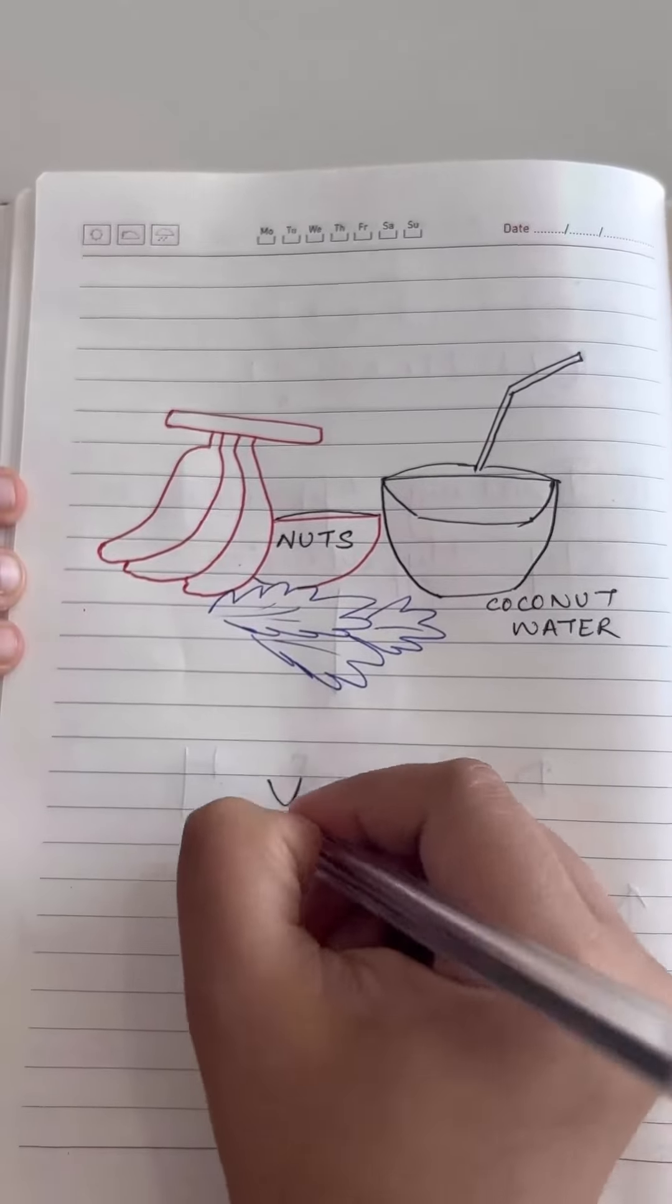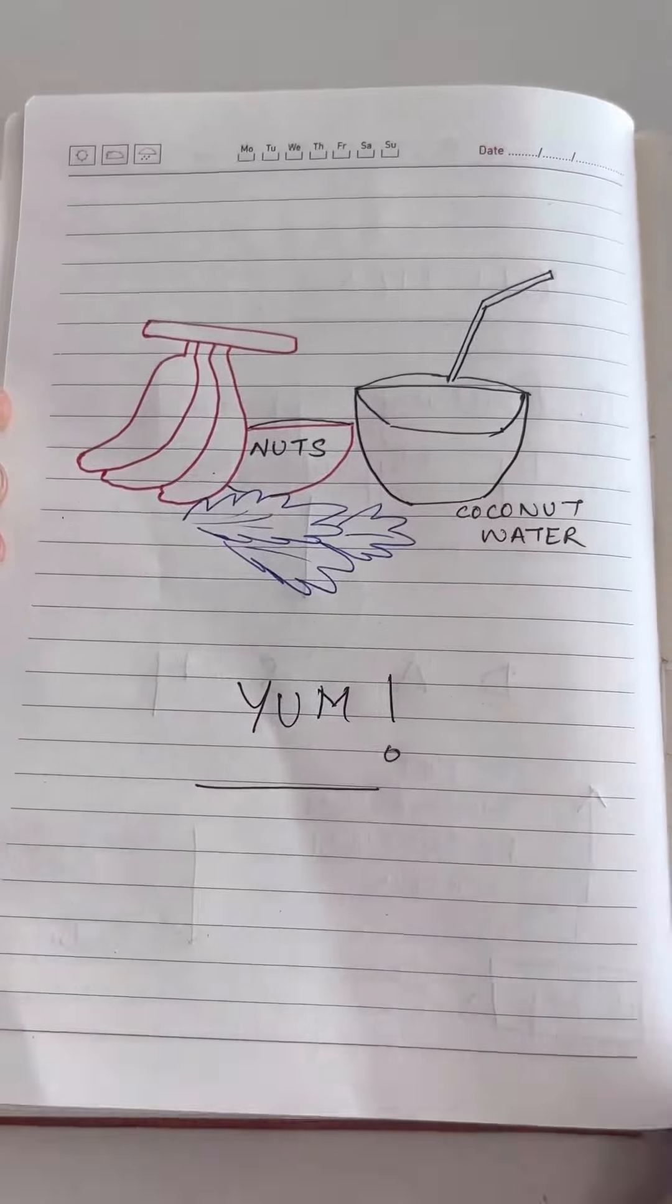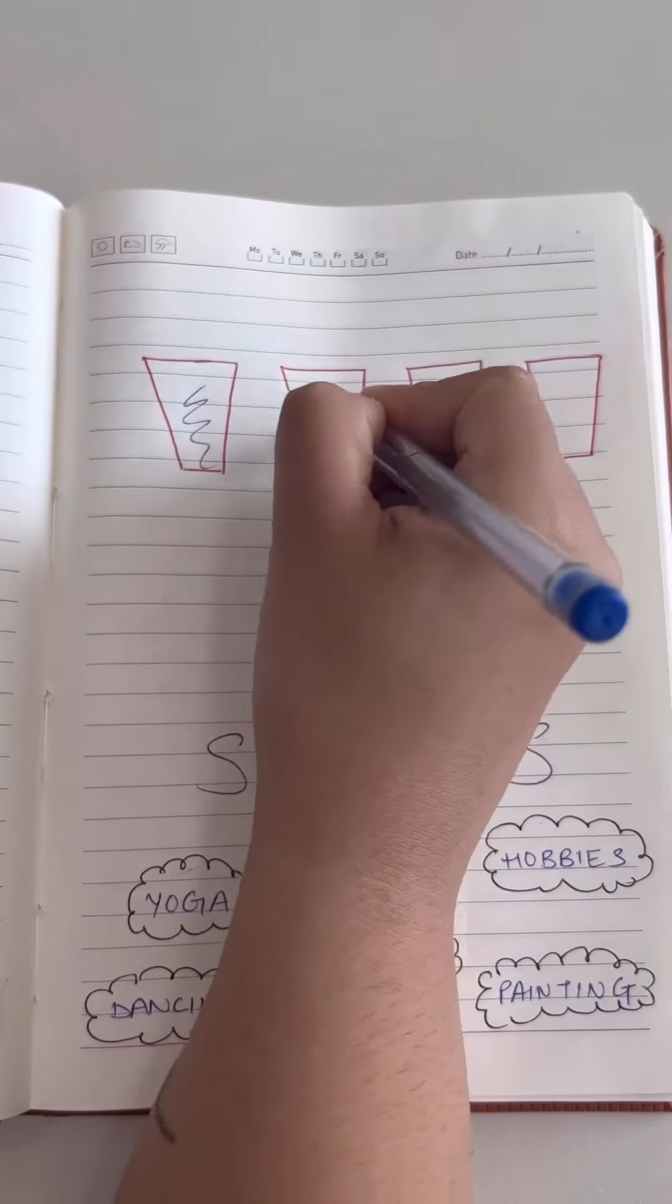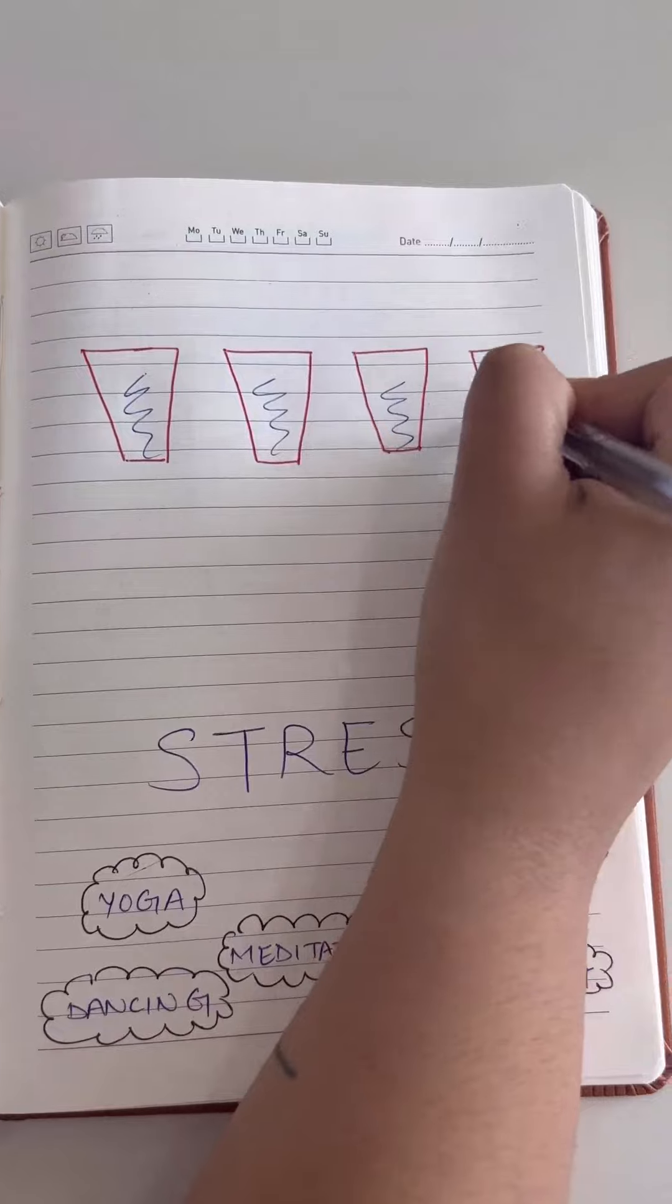Include foods like spinach, nuts, bananas that are rich in potassium. Improve your water intake and make sure you drink at least 2 to 2.5 liters of water.